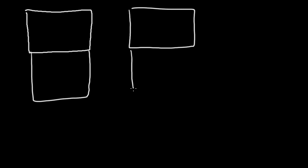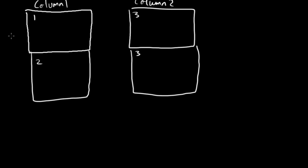Here's pixel 1, and then pixel 2 below it. We have another column of pixels here. So let's say this is pixel 1, pixel 2, pixel 3, pixel 4. And this would be, just to get our terminology straight, column 1, column 2, row 1, and row 2.